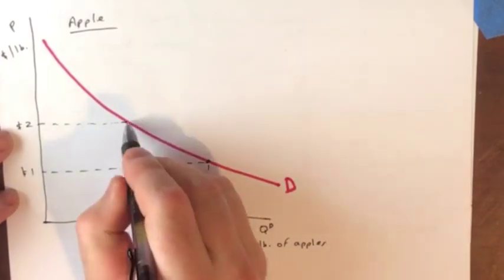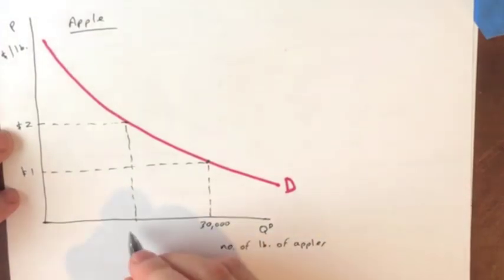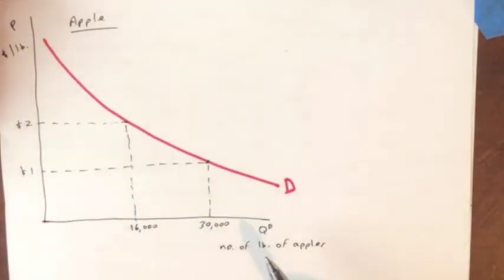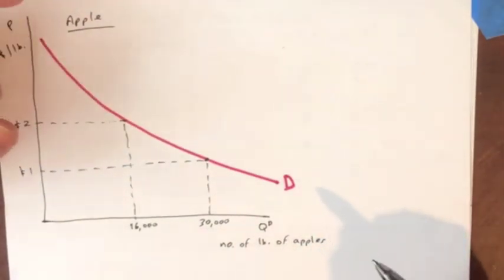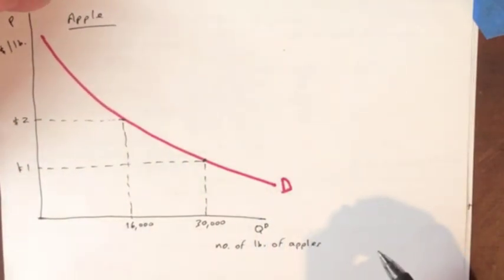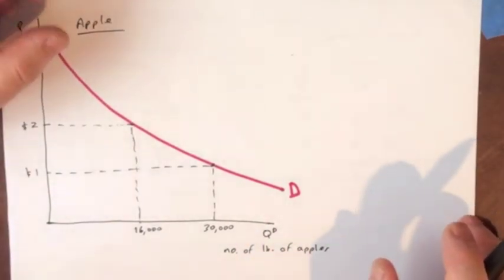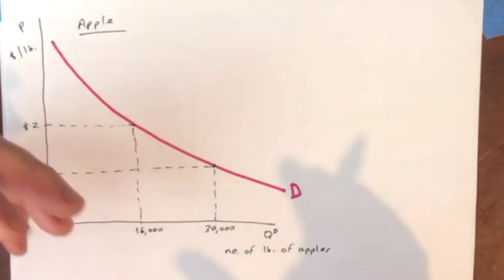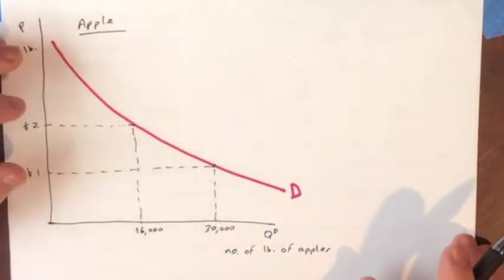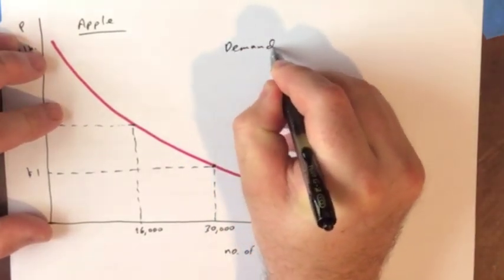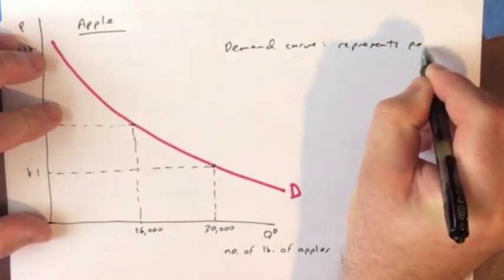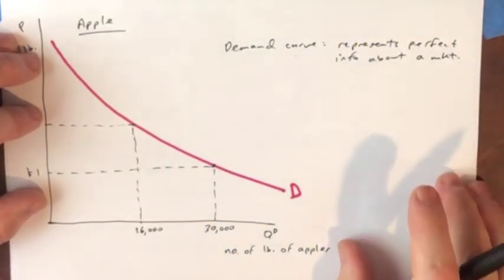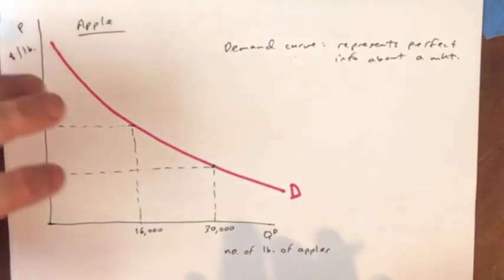And we would have that at each different level of price. So at two dollars, we would have a value for quantity demanded for that as well, let's say it's sixteen thousand. And so forth. There's a lot of points along this curve, in fact, there's an infinite number. So what this is saying is, we have an infinite amount of information about the relationship between price and quantity in this market. Here's the thing, companies do not normally have this amount of information about their product. This reflects a kind of idealized knowledge. If we have a demand curve, it represents perfect information about this market.